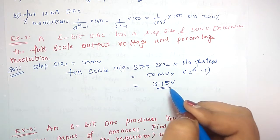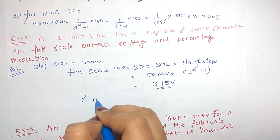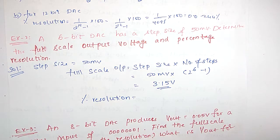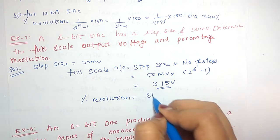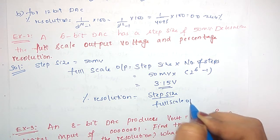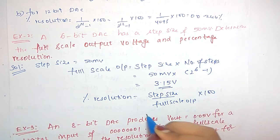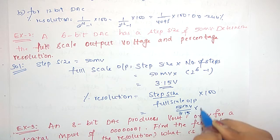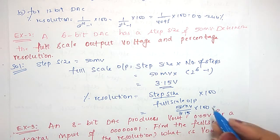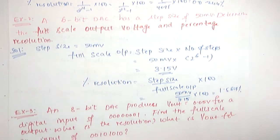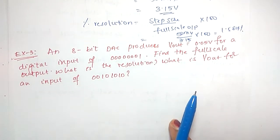Next, find the percentage resolution. You can calculate it using either 1 divided by (2 power n minus 1) multiplied by 100, or using step size divided by full scale output into 100. Using the second formula: 50 millivolts divided by 3.15 volts into 100 equals 1.587%. Using the first formula gives the same answer.